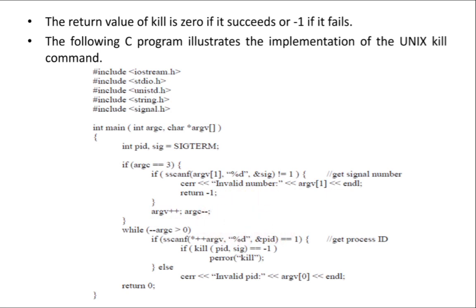If the process ID is not matching it will print 'invalid PID'. Argc equals 3 because: argv[0] holds the program name, argv[1] holds the signal number, and argv[2] holds the process ID — so there are three slots. You need a signal number and a process ID — two slots — plus one more for the program name. If you have any doubts please post them in the comment section. Thank you for watching.